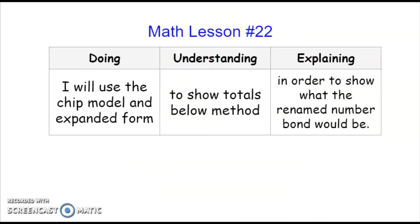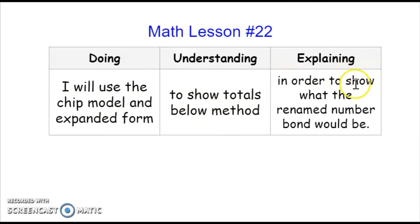Let's begin by looking at our objectives. Remember, our objective is always broken up into three separate parts so we know exactly how we're going to do something, what it is that we need to understand, and lastly, why we're doing it or why it's important. Read with me or in your head as I read out loud. I will use the chip model and expanded form to show totals below method in order to show what the renamed number bond would be. I know, my friends, that sounds very crazy, but I'm going to walk you through all of it with the teacher models.